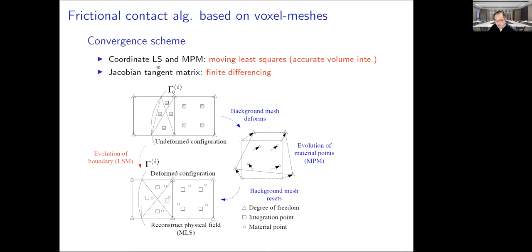We use level set to evolve boundaries, material points to update the physical variables. To coordinate these two methods, we use the moving least squares to project the variables stored at the material points to the integration points determined by the boundary for accurate volume integration. The finite difference is implemented to compute the Jacobian tangent matrix for the convergence.